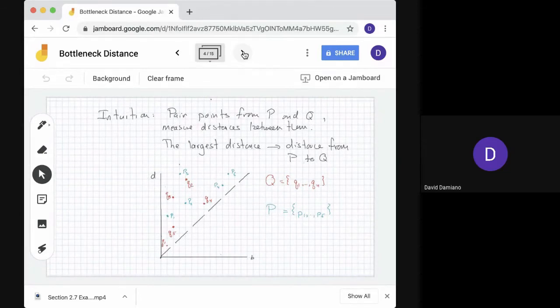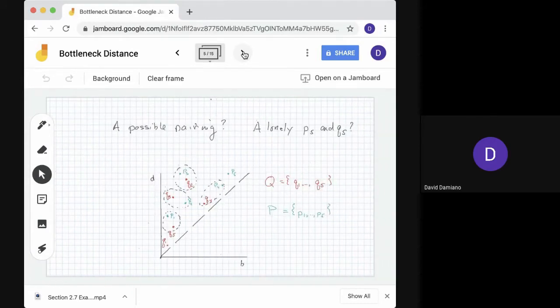So our intuition is that we'd like to pair points from P and Q. Measure the distances between them, and whatever that largest distance is between the paired points, that becomes our distance between the diagrams. So let's see what that might look like here. Okay? So here's a way to pair the points. It might not be the only one, but let's see.